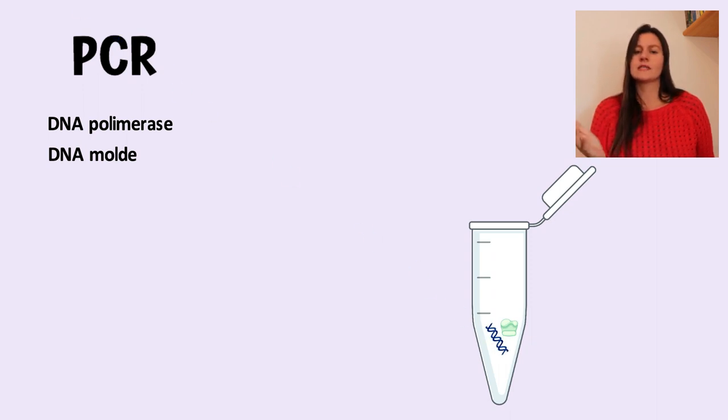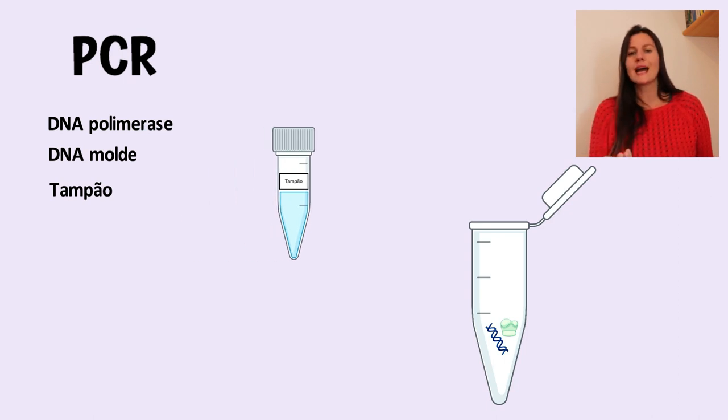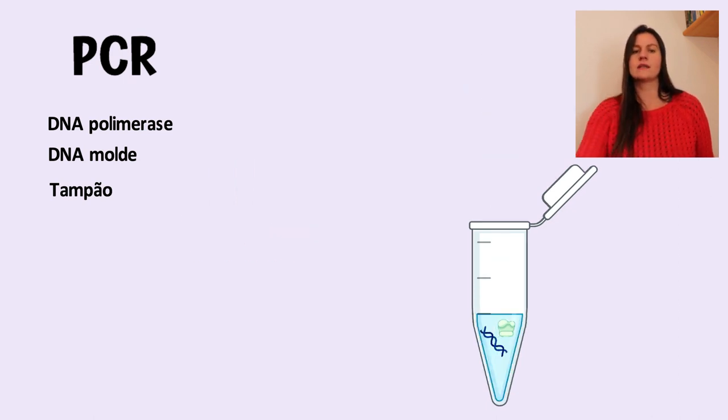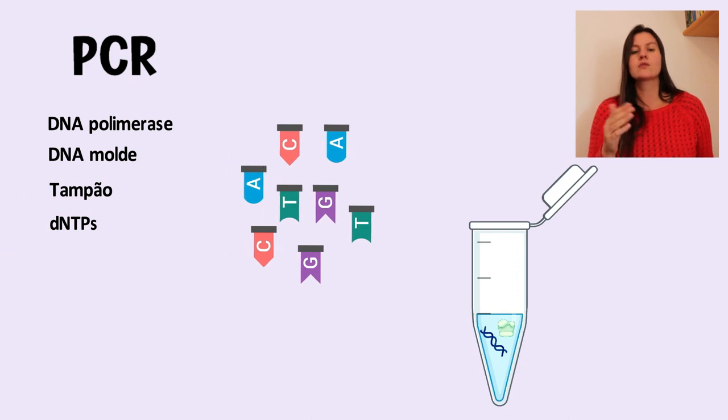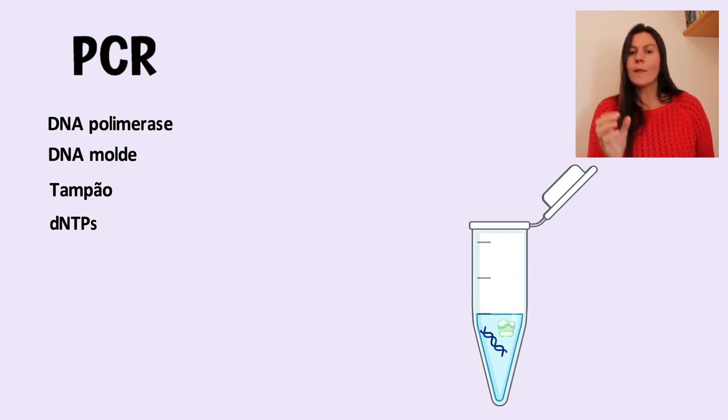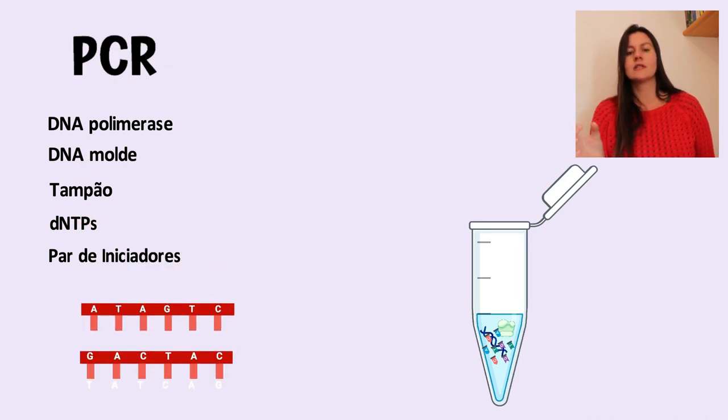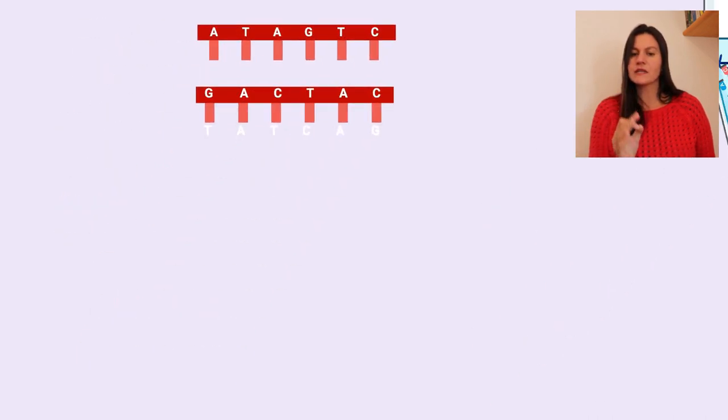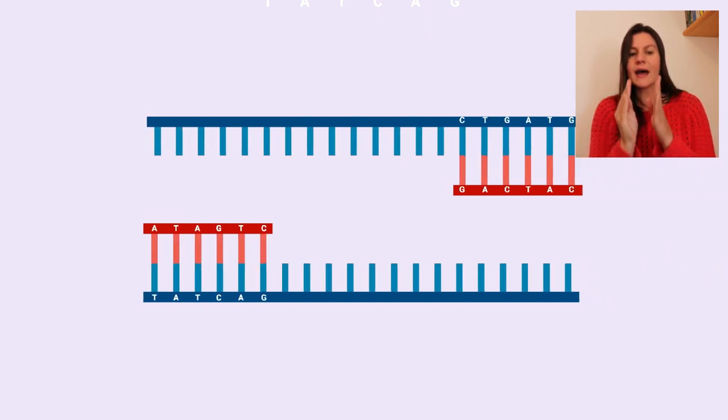Para a enzima DNA polimerase funcionar in vitro, alguns reagentes precisam ser adicionados na reação de PCR, além, é claro, do DNA molde. Para iniciar a reação de PCR, devemos adicionar um tampão, que é uma mistura de sais que fornecerá as condições adequadas para a enzima funcionar. Também precisamos adicionar os nucleotídeos, chamados de DNTPs, que são os componentes base da molécula de DNA. Além disso, precisa-se adicionar um par de iniciadores, ou primers, que são pequenos fragmentos de DNA.